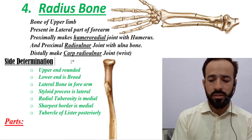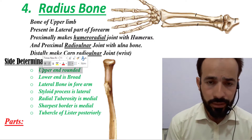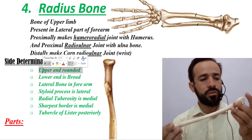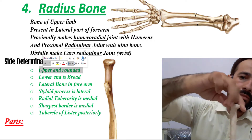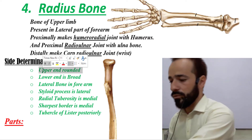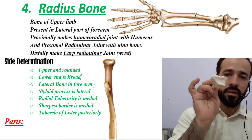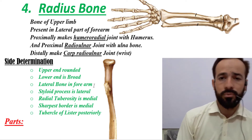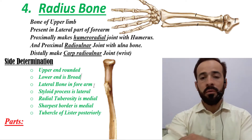Now let us discuss side determination — how to identify whether a radius bone belongs to the right or left forearm. First, the upper end of the bone is rounded while the lower end is expanded and broader. You can see this clearly when comparing the two ends.